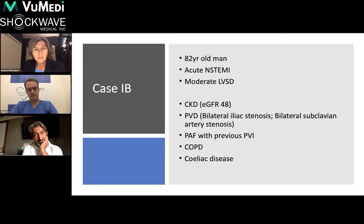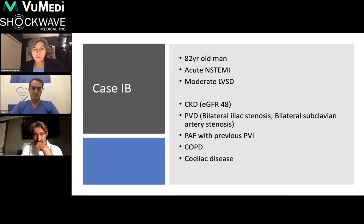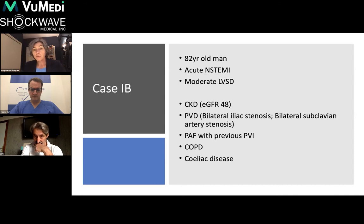This is an 82-year-old man who presented with an acute non-ST elevation MI. He's found on echo to have moderate LV dysfunction and he had lots of important comorbidity. He's got renal dysfunction with a baseline GFR of 48 and bad peripheral vascular disease including bilateral iliac stenosis and bilateral subclavian artery stenosis. He had a previous history of atrial fibrillation for which he'd been treated with pulmonary vein isolation, and had COPD and celiac disease.